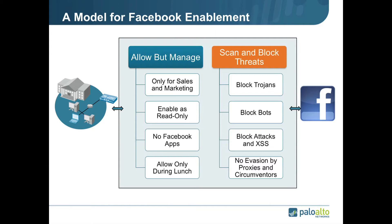Here's a quick example of what an enablement model based on this strategy looks like. For Facebook, in the allow phase, we may only allow sales and marketing to use it, because we use Facebook to communicate with customers and prospects. We could set it to read-only so those users can't post, and restrict Facebook apps entirely.